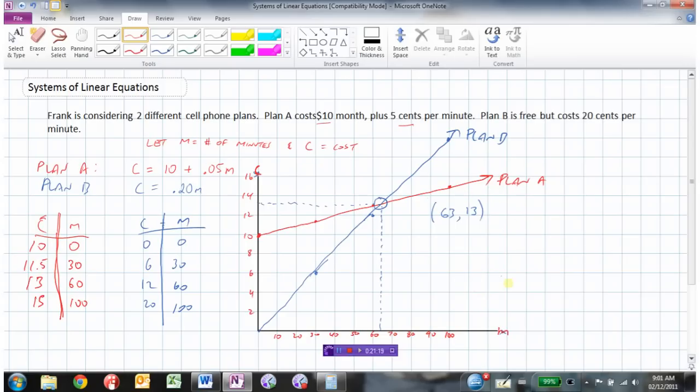So now Frank will know if he's not much of a talker and he's going to talk less than about 63 minutes per month, then he should go with Plan B. But if he's going to be doing a lot of talking, more than 63 minutes, then Plan A becomes the cheaper option. Now what we can do is we can test these points to see if this is indeed the point that works in the equation. So let's do Plan A here first.